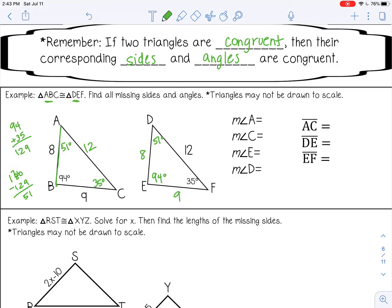Now I'll fill out these blanks on the right-hand side. Angle A, the measure is 51. This little m just stands for the degree measure. C is 35, E is 94, D is 51, line segment AC is 8, DE is 12, DE is 8, and EF is 9.